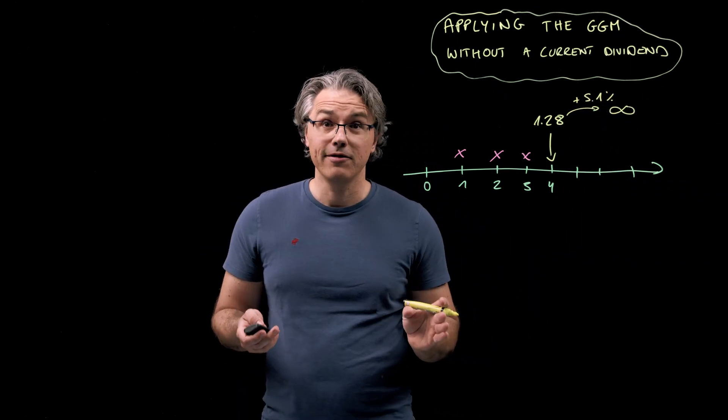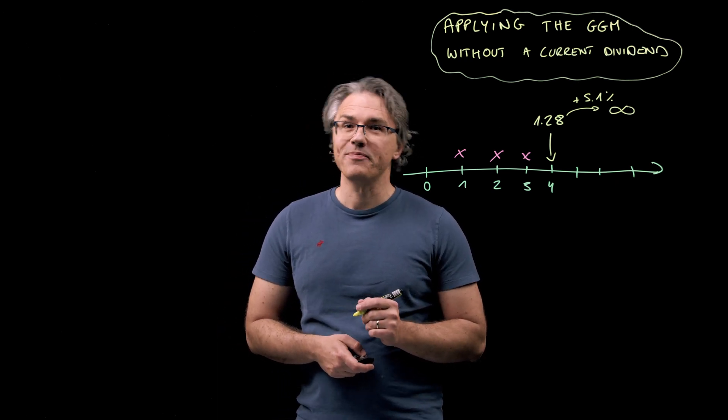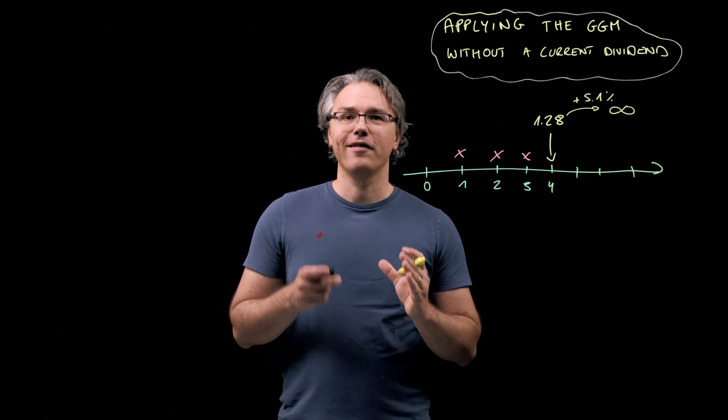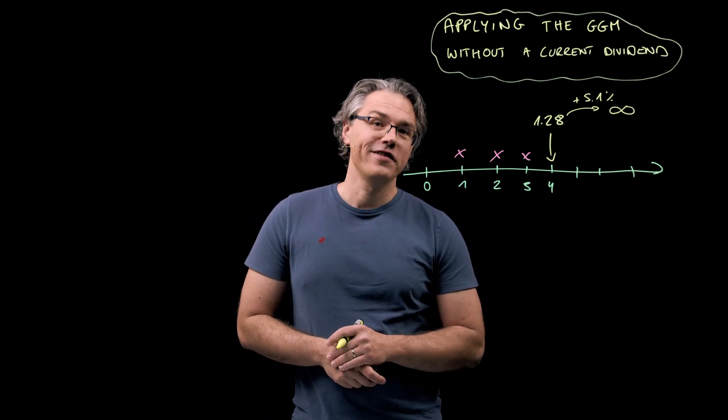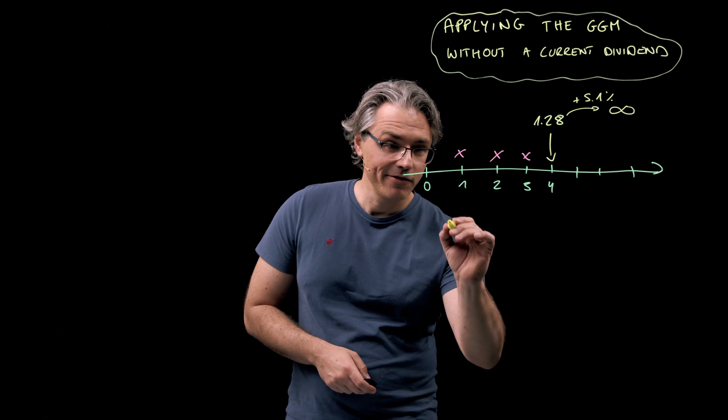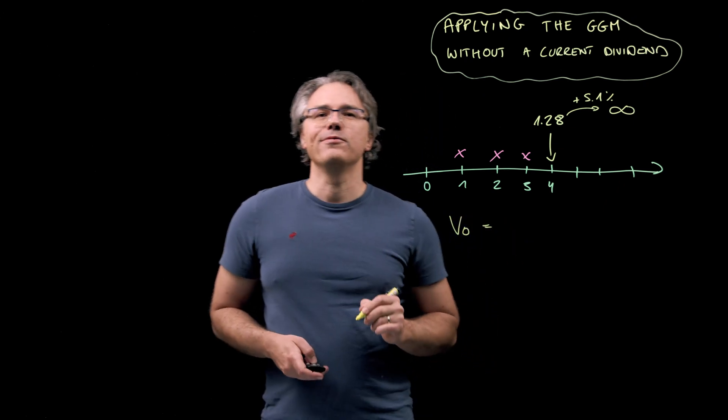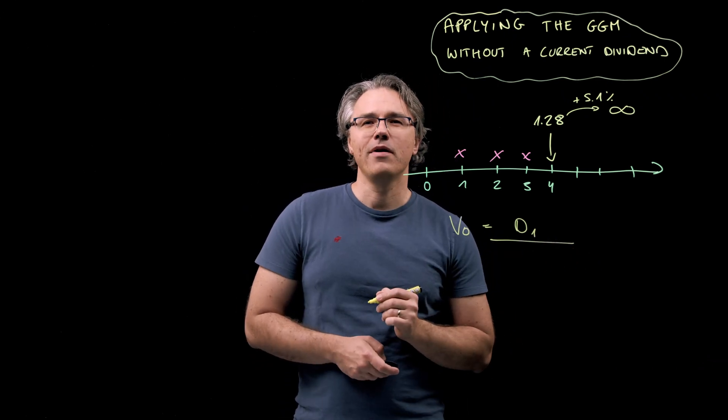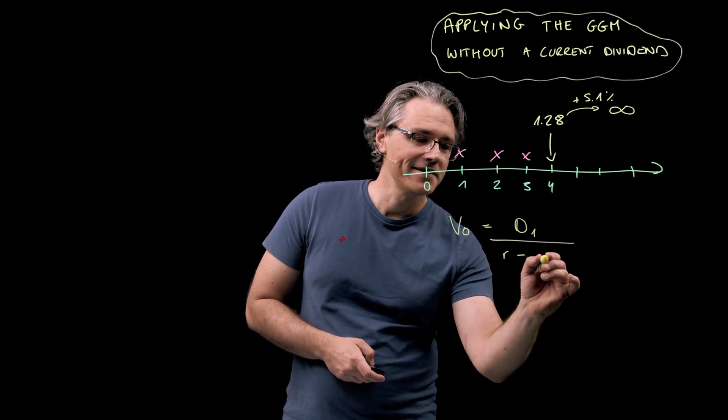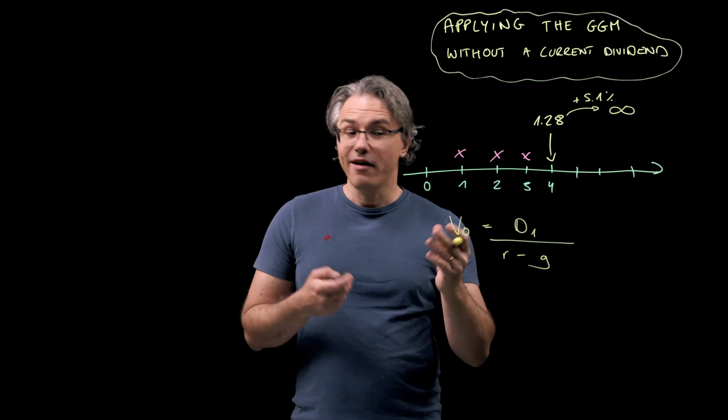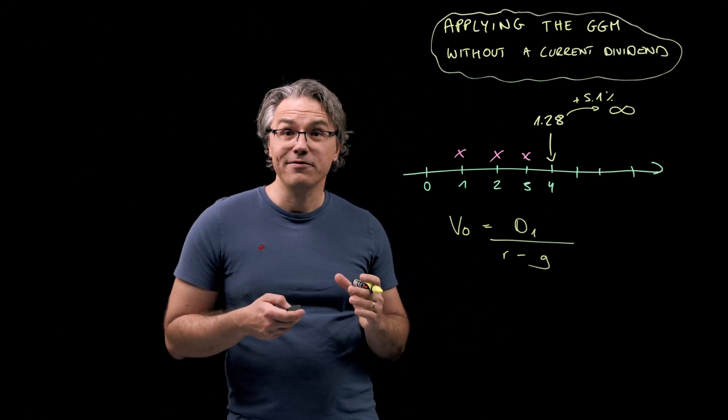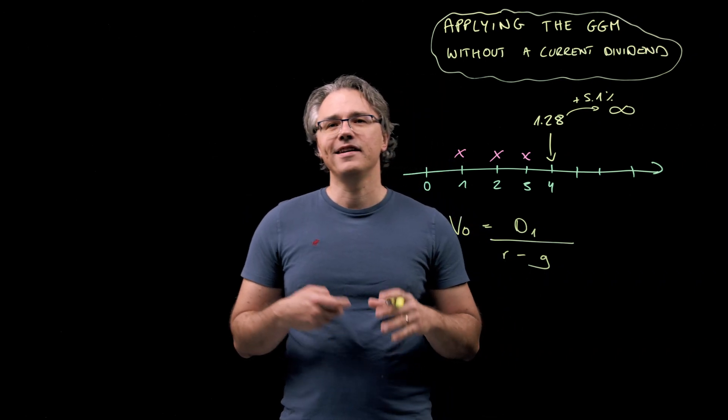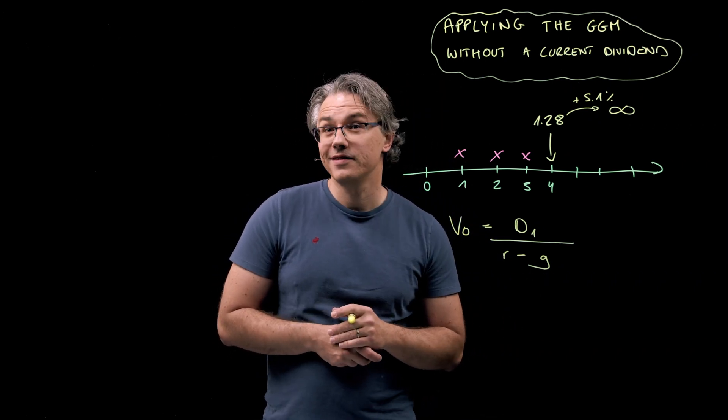Let's also write down the Gordon growth model formula and this is something you absolutely need to know off by heart. The value of a stock at time 0 equals the dividend at time 1 divided by r minus g, where r is the rate of return required by investors and g is the constant rate of dividend growth.